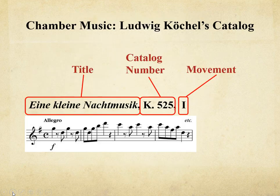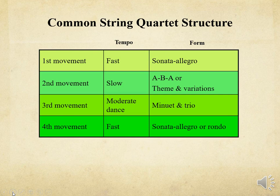Mozart's works were catalogued chronologically by Ludwig von Köchel. The work was listed with a K followed by a number, and then the movement. The chronology of Mozart's music is being revised continuously. The structure of a string quartet is as follows: the first movement is usually fast in sonata allegro form; the second movement is slow in ABA or theme and variations form; the third movement is often a dance-related movement such as a minuet and trio at a moderate tempo; and the work concludes with a fourth movement at a fast tempo in sonata allegro or rondo form.